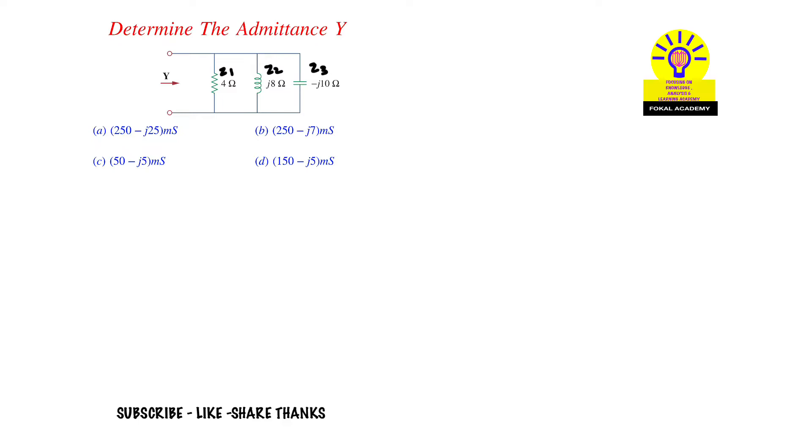These three components are in parallel, so the overall admittance equals the sum of all admittances: Y = Y1 + Y2 + Y3.